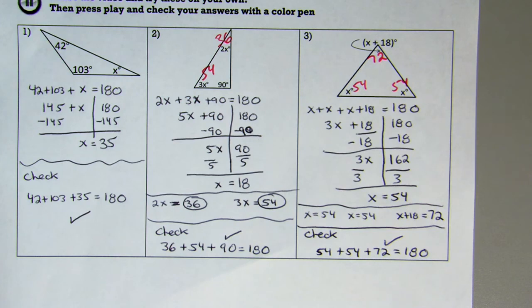My first one there is 42 plus 103 plus x. You should get a value of 35, and yes, that does check to work to 180.